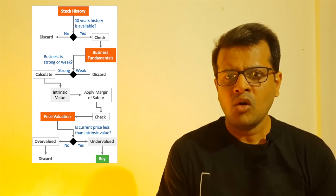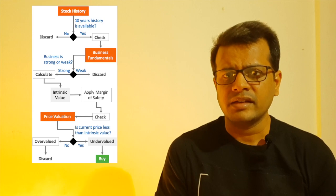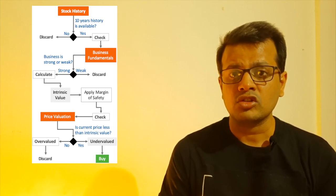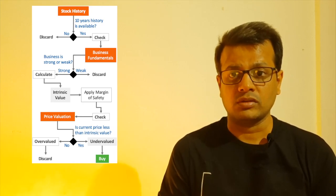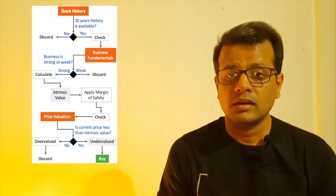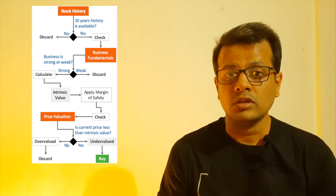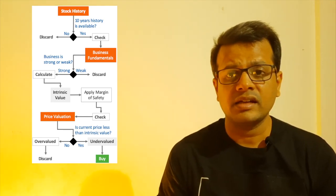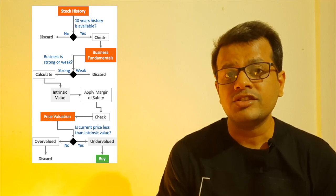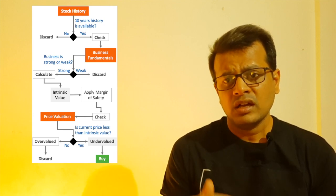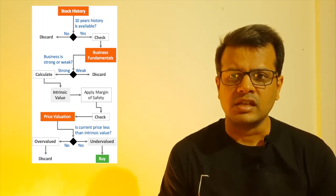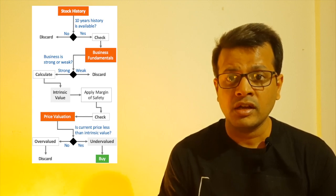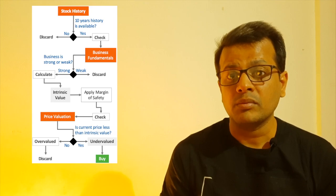The second step: once a stock has 10-year data, the next step is to check whether the business fundamentals of those stocks are strong enough or not. If you use my Excel tool, it does that business fundamental check on its own — you just feed the data in the Excel and the fundamental checking is done automatically. Once a stock has a 10-year history and is also fundamentally strong, it becomes a strong contender to become a value stock.